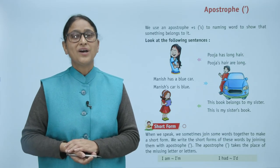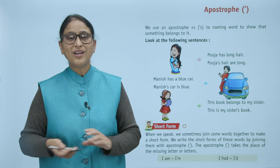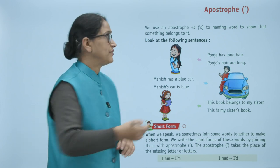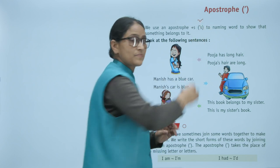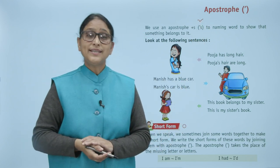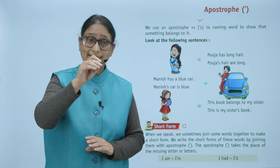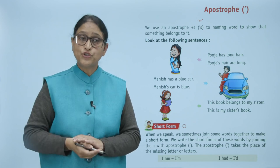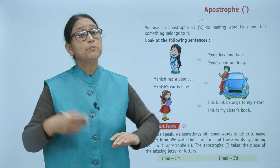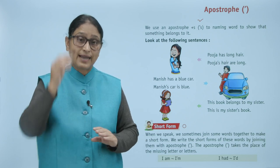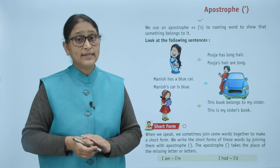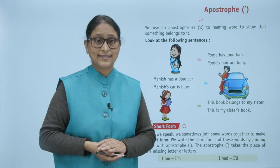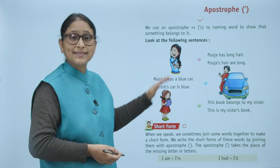Hello children, how are you? I hope you all are doing good. Now we will do apostrophe. We use an apostrophe plus S — apostrophe S — with a naming word to show that something belongs to it. We use apostrophe to show that something belongs to someone.